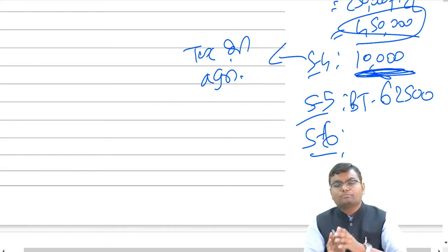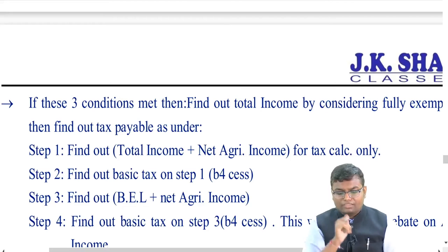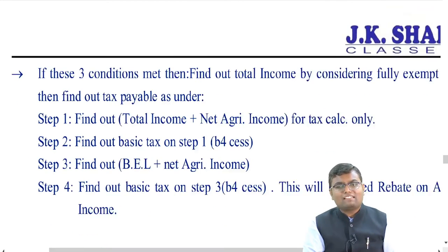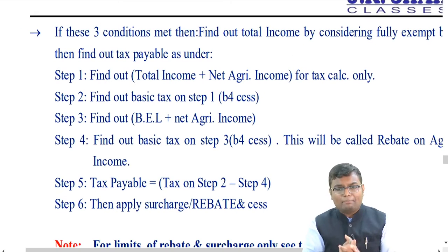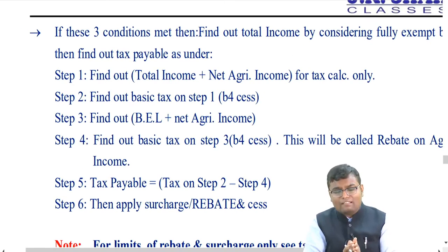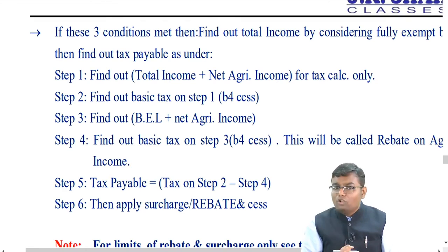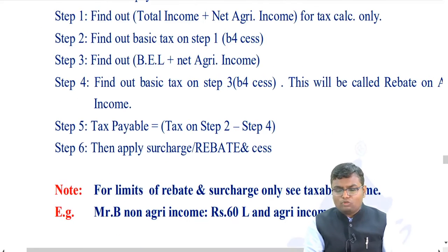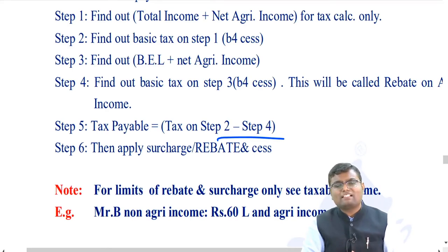In summary, when partial merger is applicable: Step 1 — total income plus net agricultural income. Step 2 — basic tax on step 1. Step 3 — basic exemption limit plus net agricultural income. Step 4 — basic tax on step 3. Final basic tax = step 2 minus step 4. Then apply rebate, surcharge, and cess as applicable.